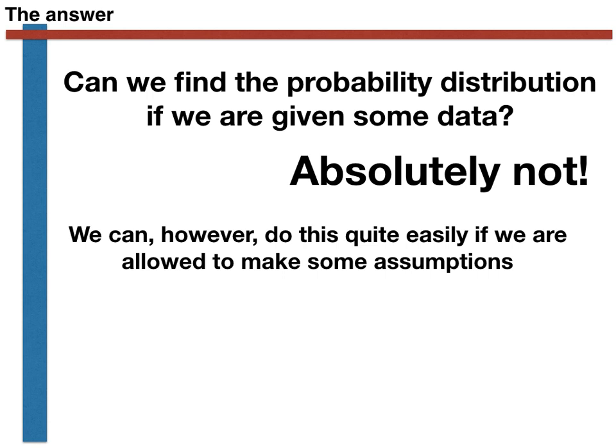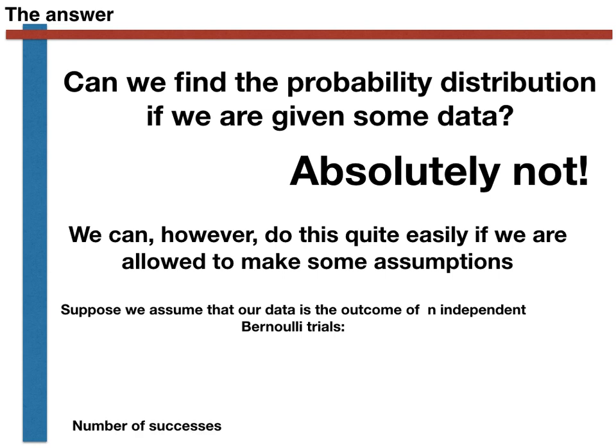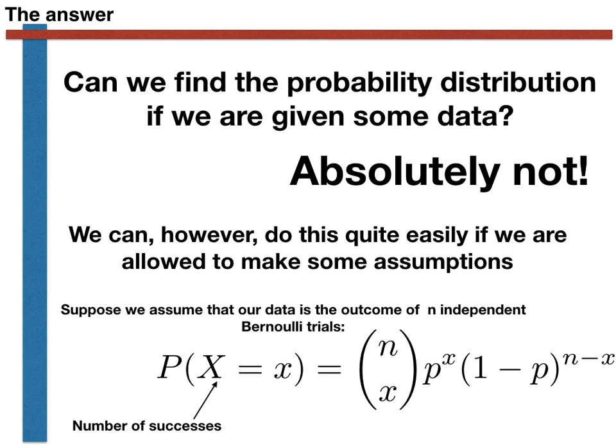For instance, if we are given a random variable capital X, we can assume that this is a sample from a particular distribution. For instance, we might suppose that capital X is the sum of n independent Bernoulli trials. In other words, capital X is a binomial random variable. We know that the probability mass function of a binomial random variable is given by the expression shown at the bottom of this slide. The problem just reduces to finding the value of the parameter P in this expression.